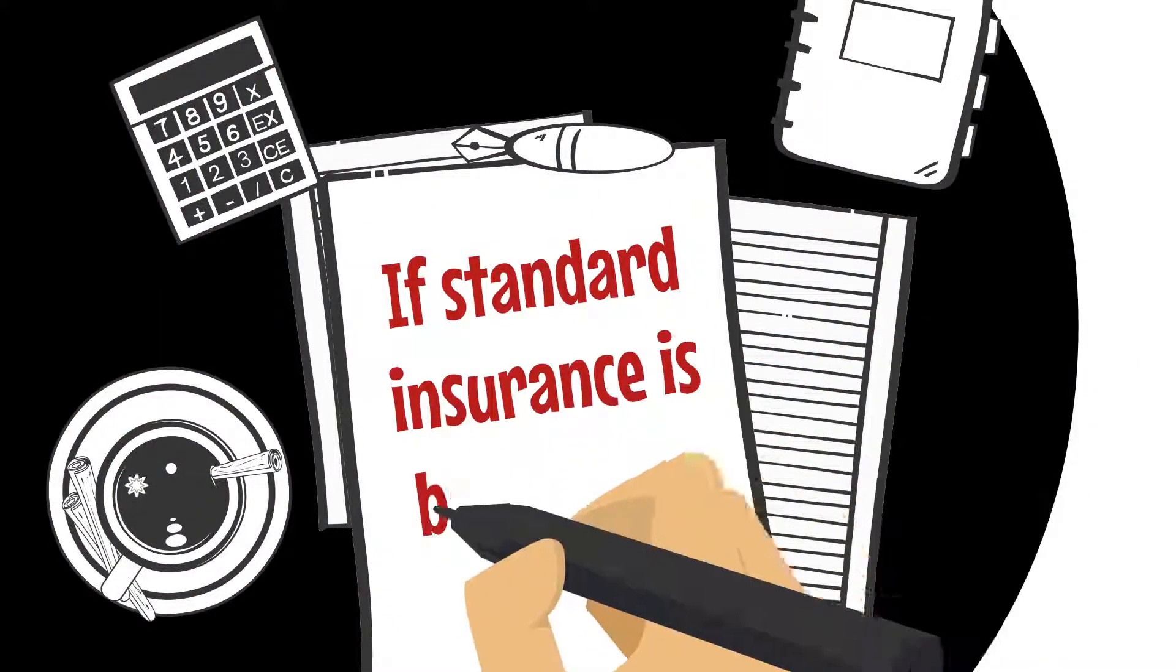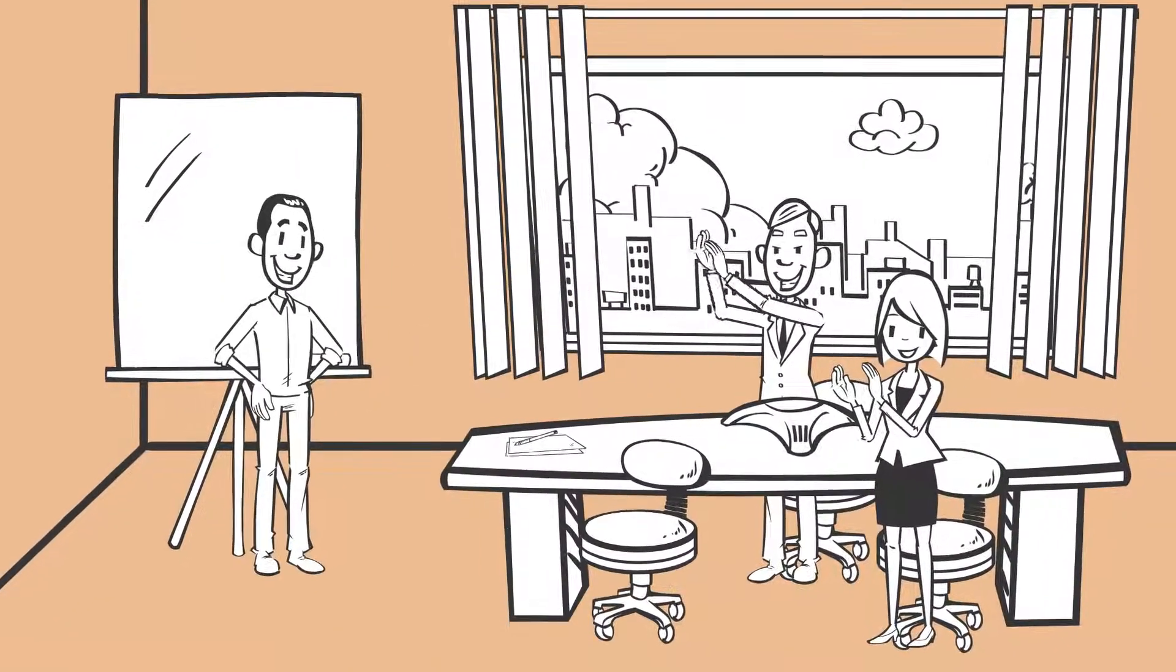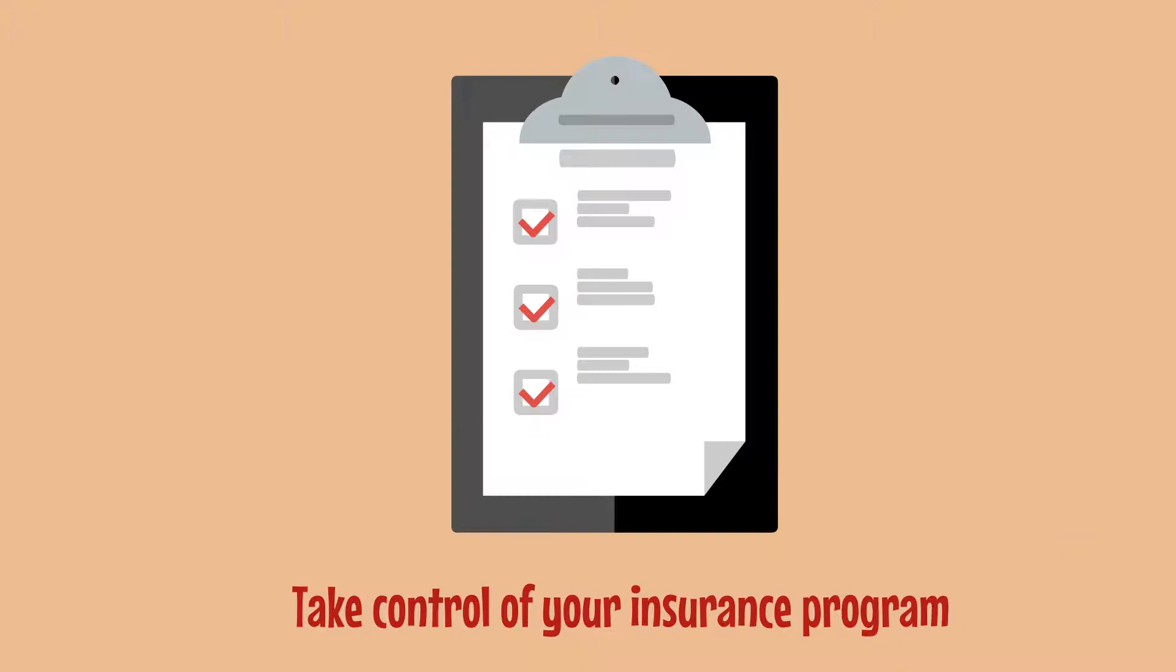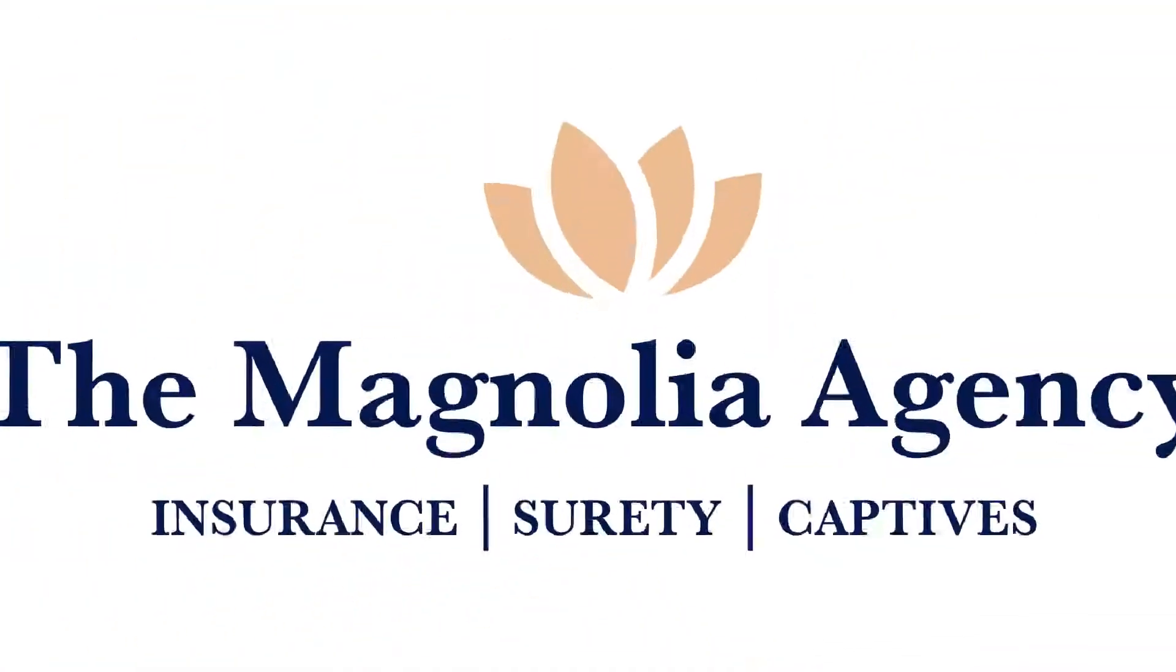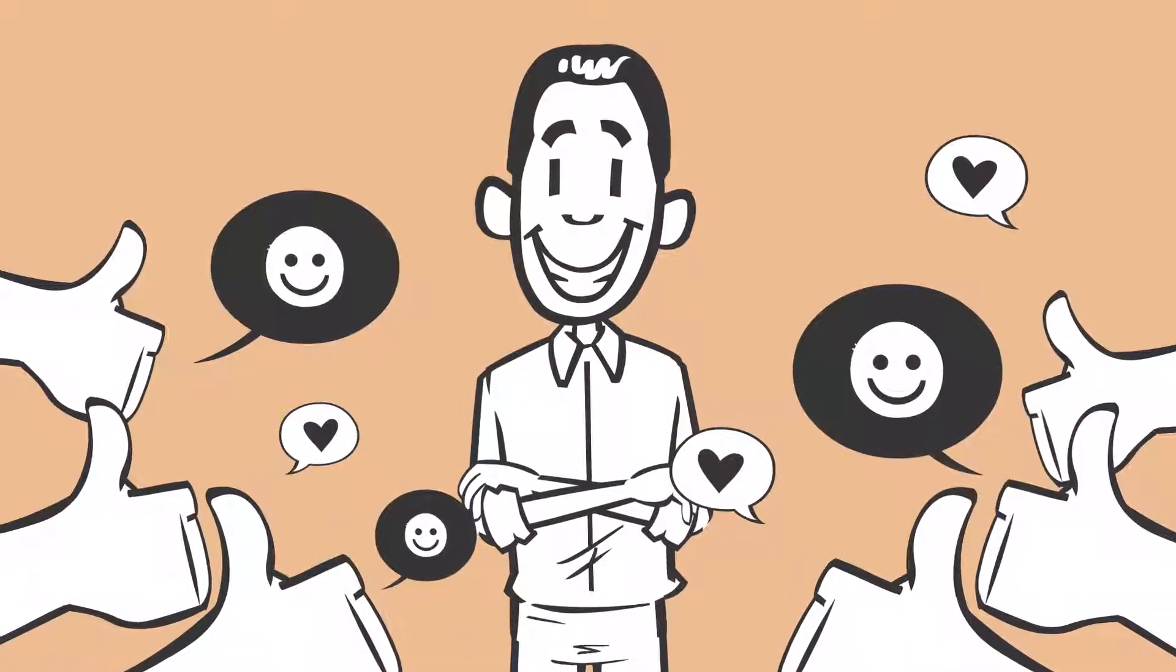If standard insurance is basic cable, member-owned business captives are Netflix. If you take pride in your business culture and employee safety, take control of your insurance program. Call the Magnolia Agency today and build equity for your business, not for the insurance carrier.